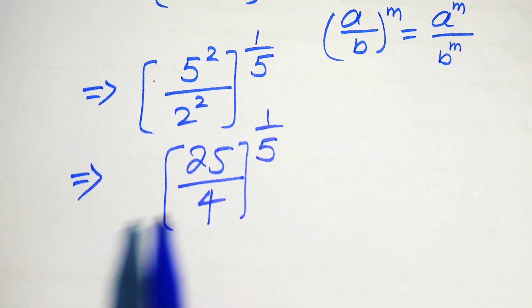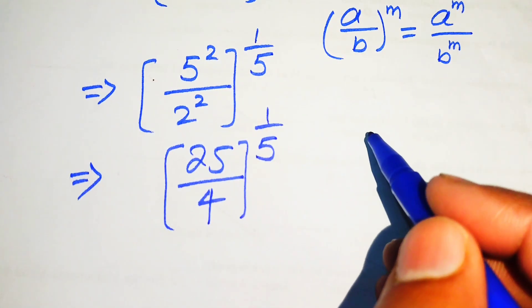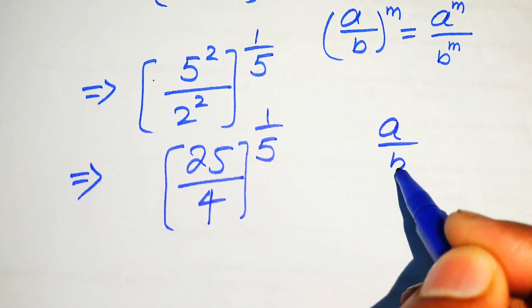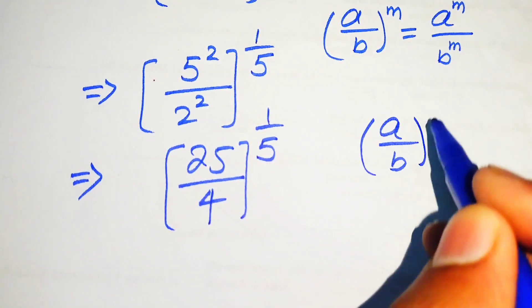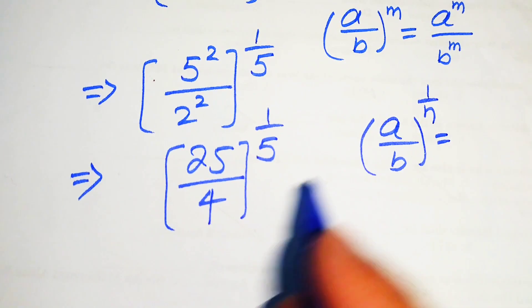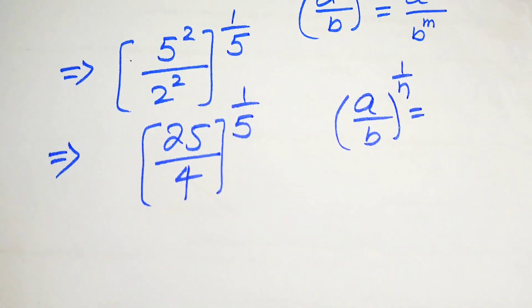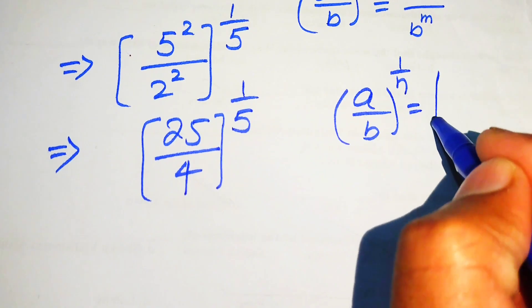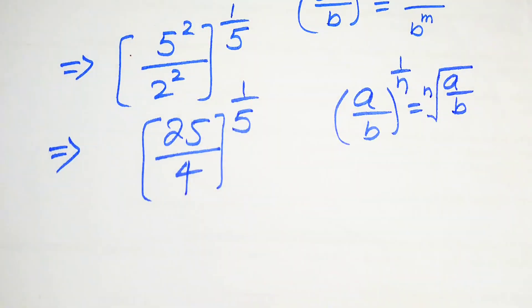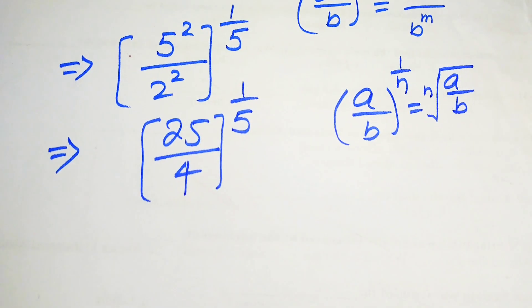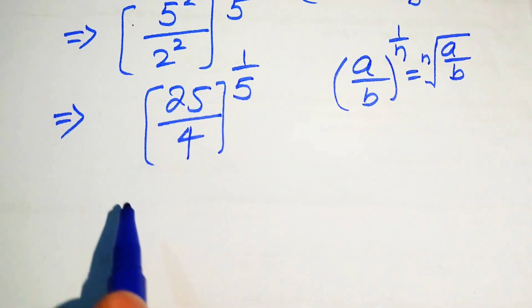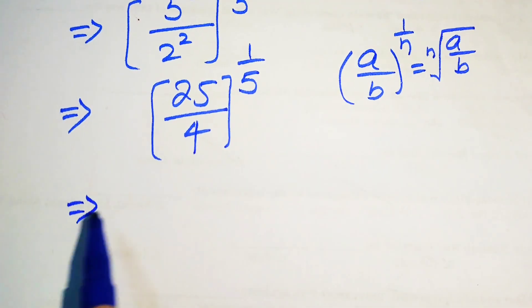After that, we have another radical law. If we have (a/b) to the whole power 1/n, we write this exponential form into the radical form as the nth root of (a/b). So we write this as the 5th root of (25/4).